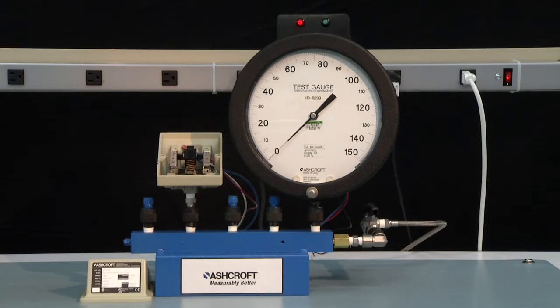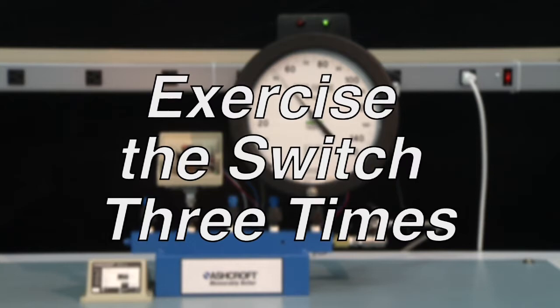The first step of calibration is to exercise the switch to make sure it is operating correctly. To exercise a switch, start from 0 PSI and increase to full range of the switch. In this case, 100 PSI and then return back to 0. This should be done three times.